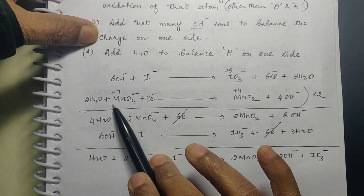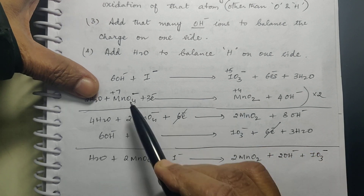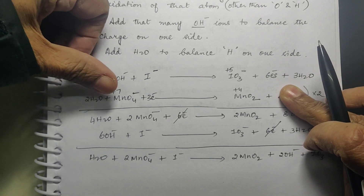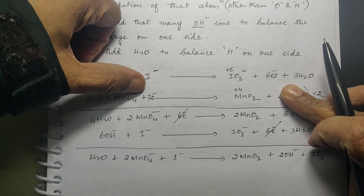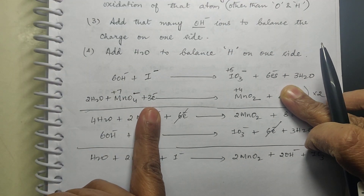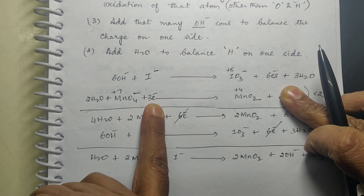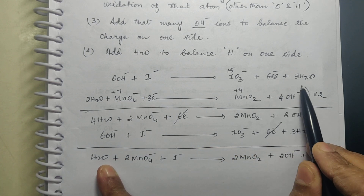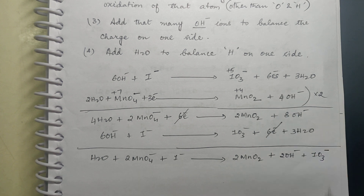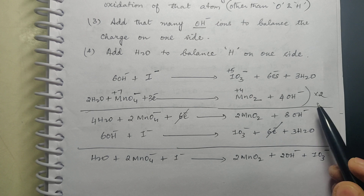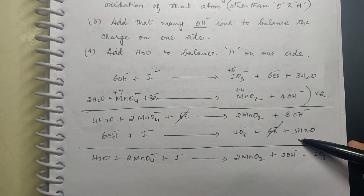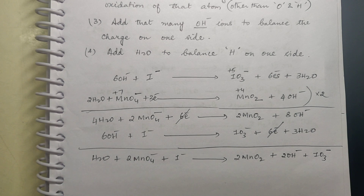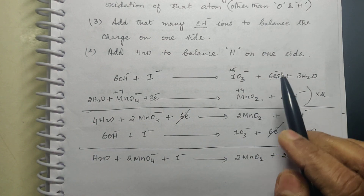Now look at the next one: MnO₄⁻ to MnO₂. Manganese goes from +7, and adding 3 electrons gives +4. On the reactant side you have MnO₄⁻ which is minus 1 charge, and you have added 3 electrons — a total of 4 negative charges — so you add 4 OH⁻. However many negative charges there are, that many OH⁻. Now there are 3 electrons here and 6 there, so you multiply this equation by 2 and the rest is the same as in acidic medium.